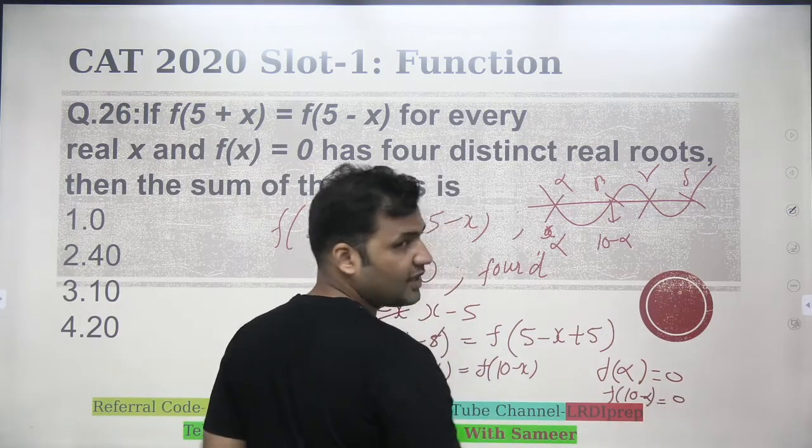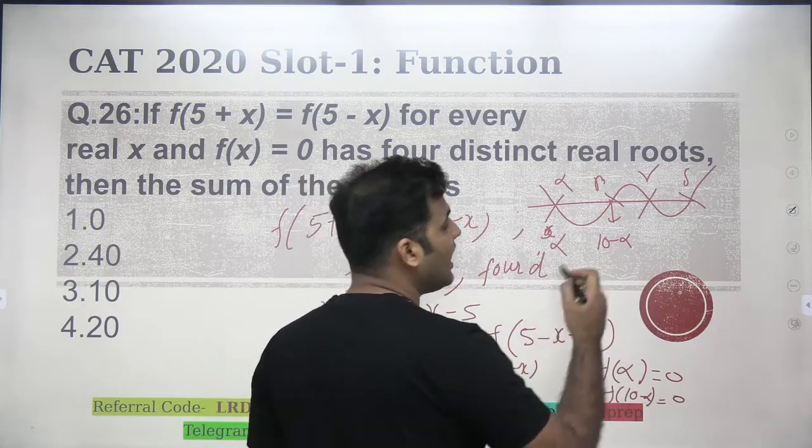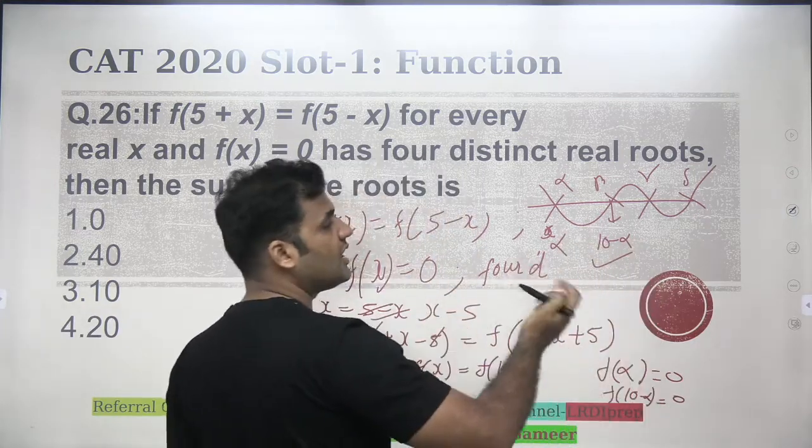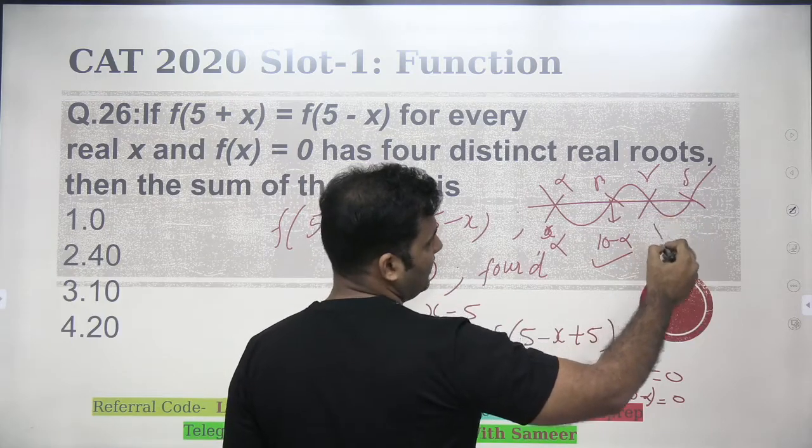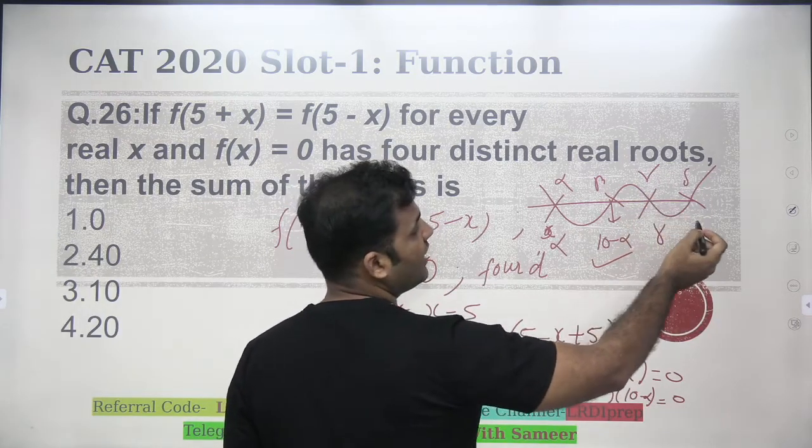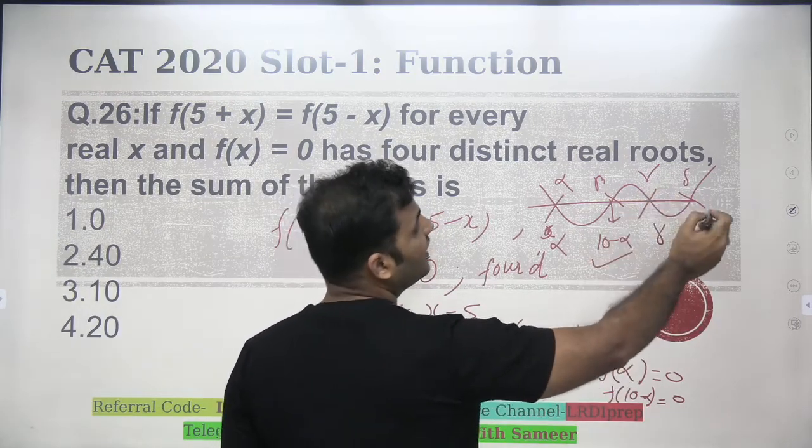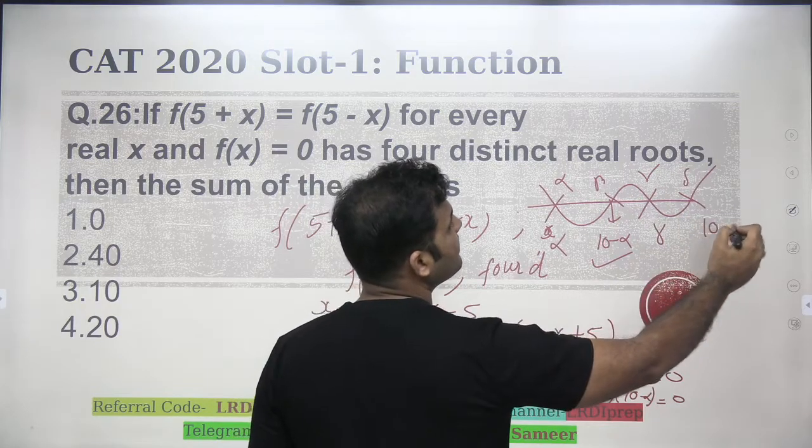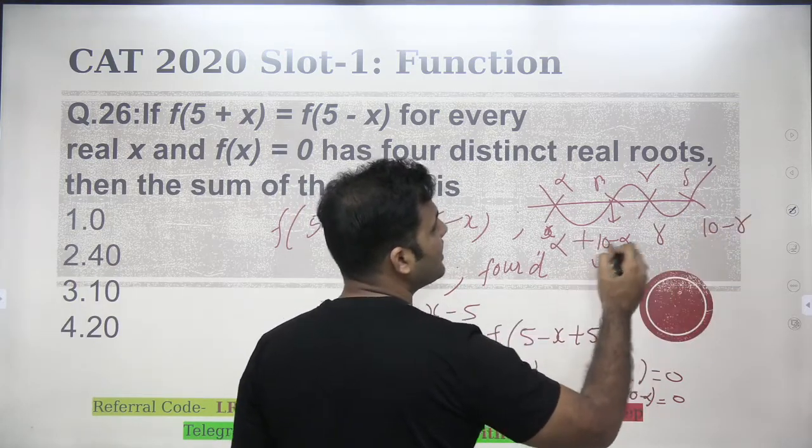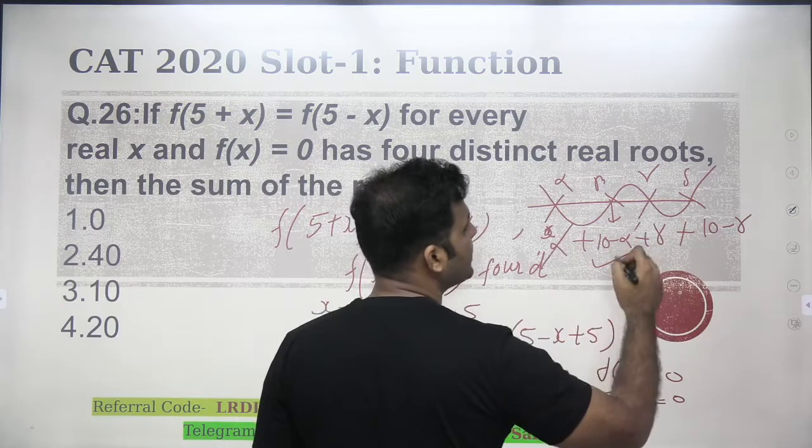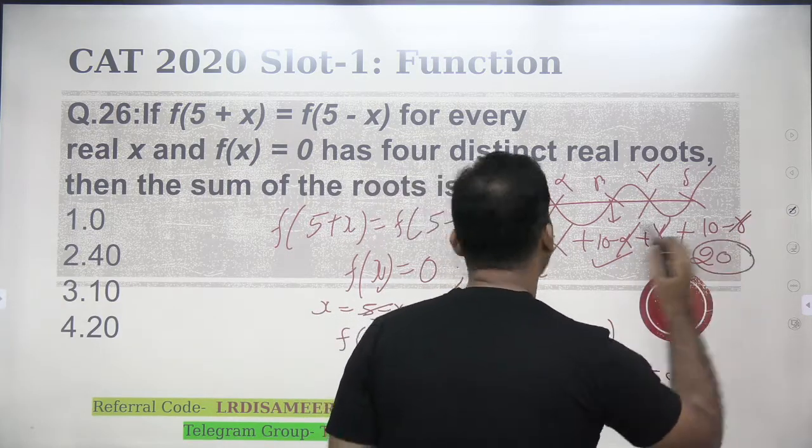And if f of 10 minus alpha is 0, that means the another root of the equation would be 10 minus alpha. And then if I am saying that gamma is the third root, then the fourth root would be 10 minus gamma. So, if I want the summation of all of these values, this will get cancelled. 10 plus 10, answer will be 20.